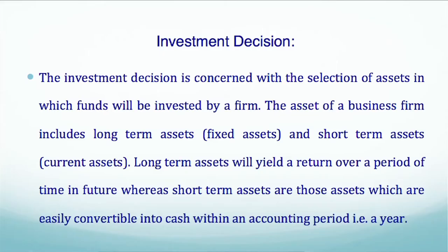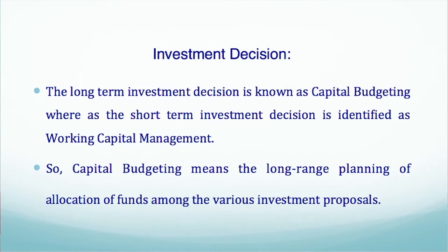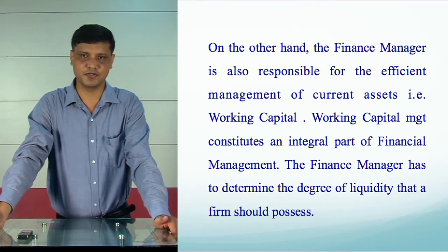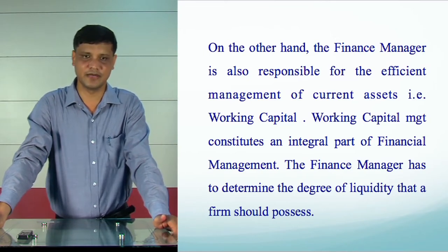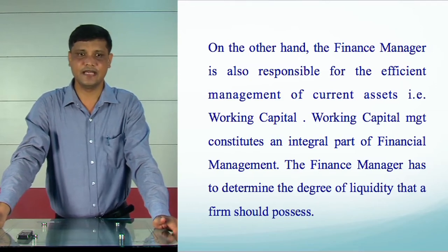The investment decision is concerned with the selection of assets in which funds will be invested by a firm. The assets of a business firm include long-term assets called fixed assets and short-term assets called current assets. Long-term assets will yield a return over a period of time in future, whereas short-term assets are those easily convertible into cash within an accounting period. The long-term investment decision is known as capital budgeting, whereas short-term investment decision is defined as working capital management. Capital budgeting means the long-range planning of allocation of funds among the various investment proposals. The finance manager is also responsible for the efficient management of current assets, and must determine the degree of liquidity that a firm should possess.